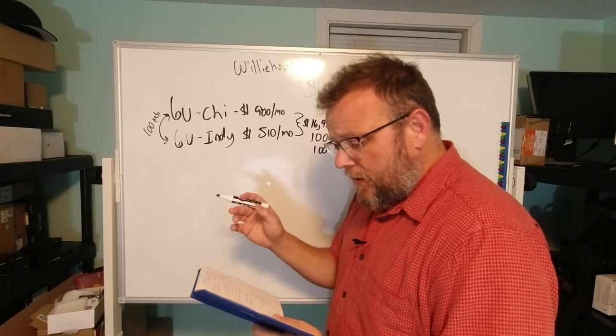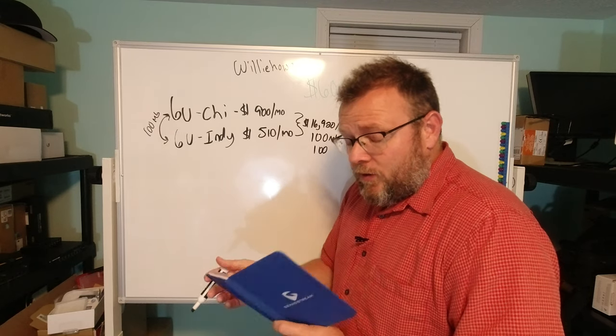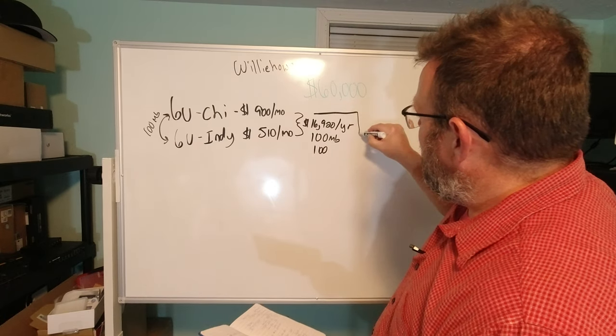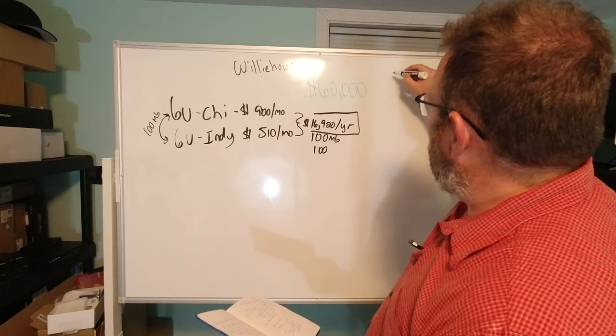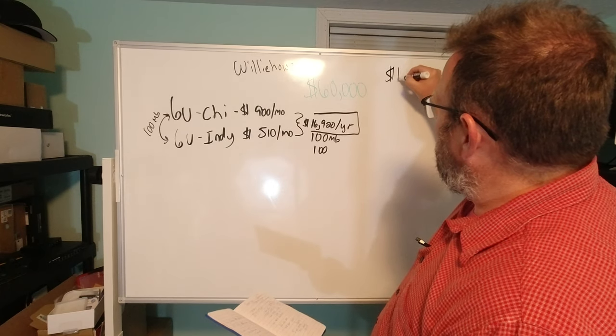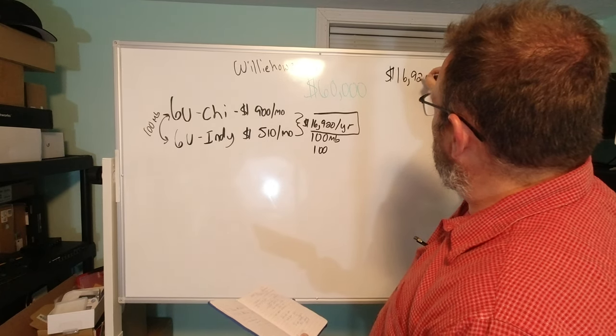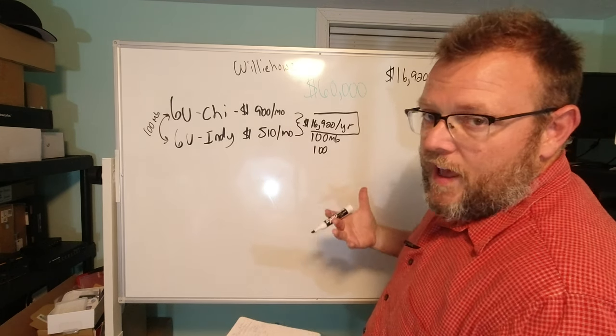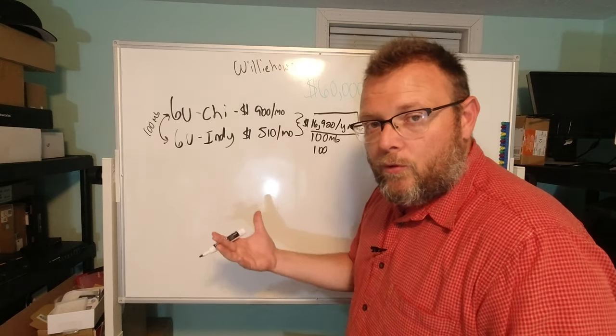So I have a direct 100 megabit connection between my two data centers. So now what I need to do is I need to populate this. So here's our first number, so that is going to be $16,920 a year.